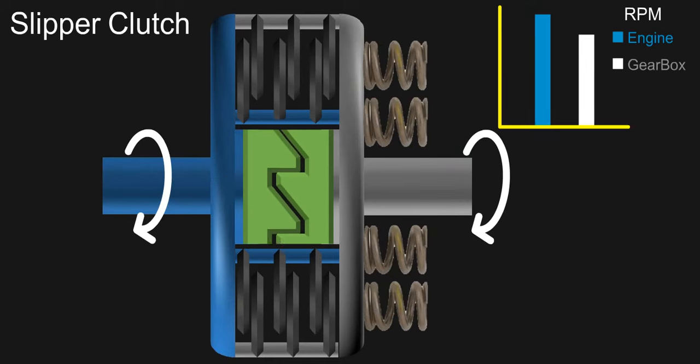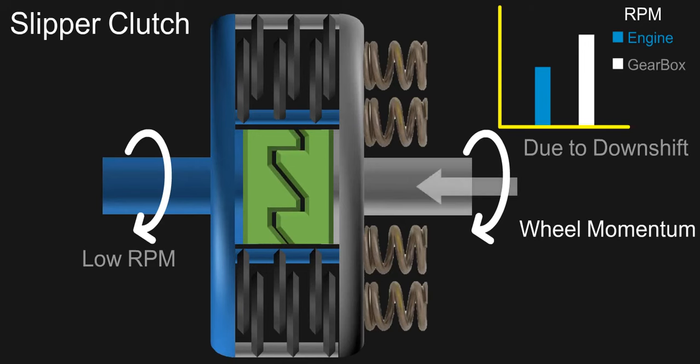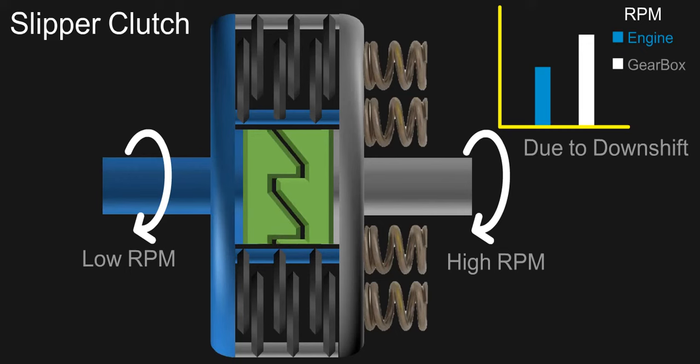Now in case, when engine speed is reduced drastically or multiple downshifts are done, then this side becomes relatively slower and the momentum of the wheel wants to drive this shaft at higher speed. In such case, these ramps come in contact with each other from this side.